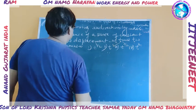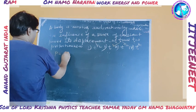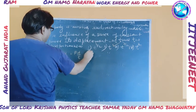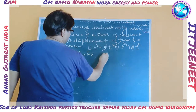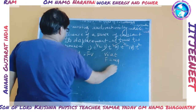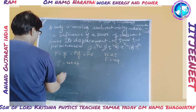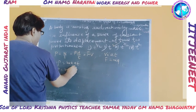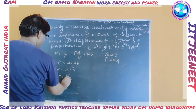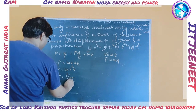We know that power P is equal to W upon t, which is equal to F times d upon t, which is equal to F into v. Now we know that v is equal to at and F is equal to ma. Therefore, P is equal to ma into at, which gives P is equal to ma²t. Therefore, a² is equal to P upon m into t. Therefore, a is equal to under root of P upon m.